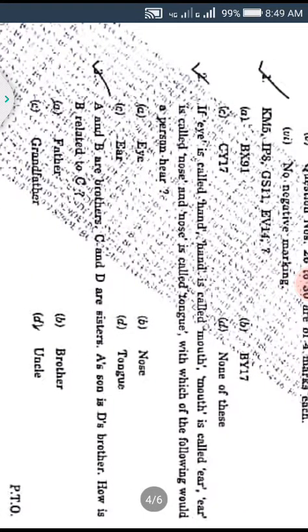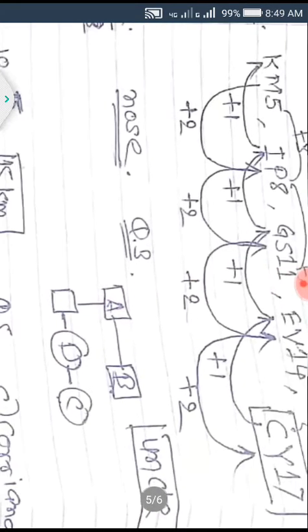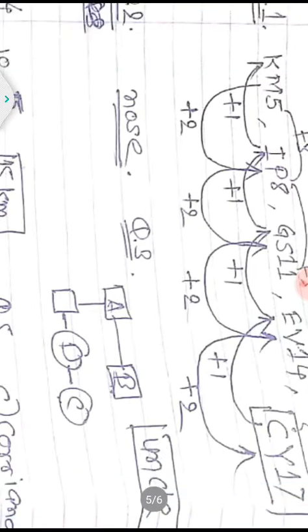Question number one is based on series. We have to find out the relation and pattern of letters and numbers: KM5, IP8, GS11, EV14 — and after that we have to find out the next term. The correct answer is option C: CY17. Starting from C, we look at the first letters.